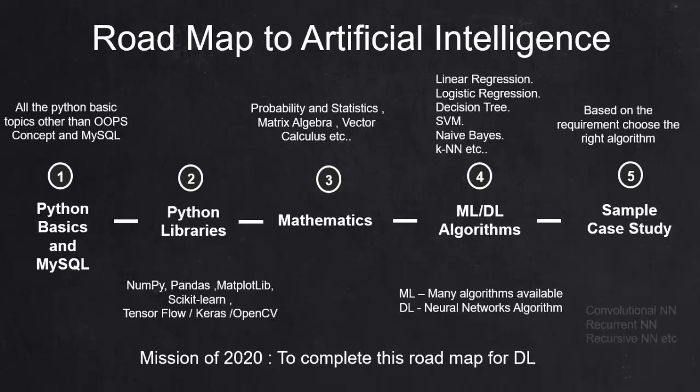For deep learning, we can implement many architecture models like convolutional neural network, recurrent neural network, recursive neural network, and so on. So the conclusion is our mission is to complete this roadmap in 2020. Hope you got a clear picture about the roadmap.